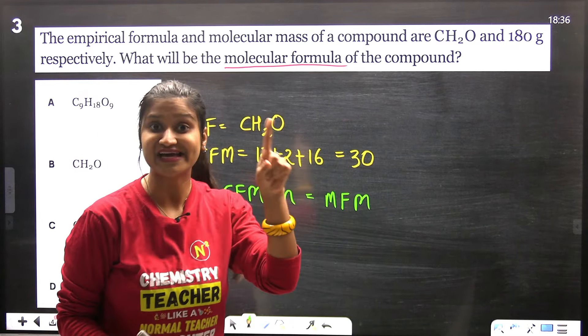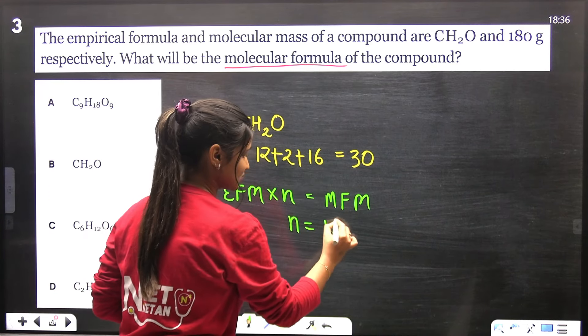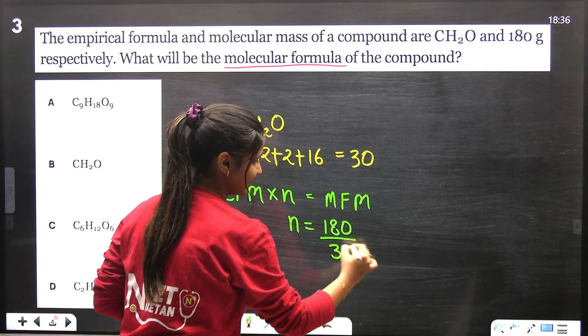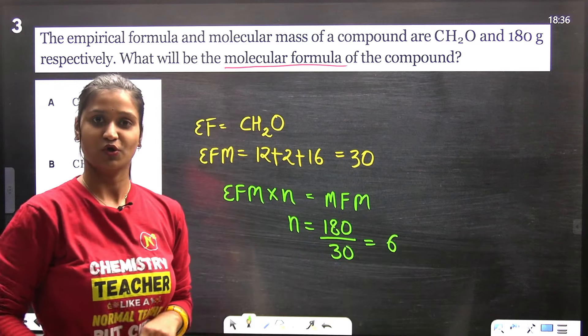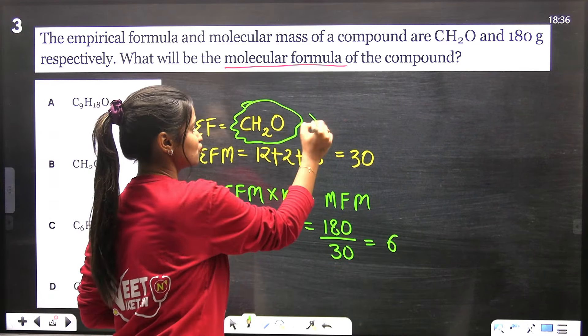So N will be the molecular formula mass, that is 180 over 30, which is 6.